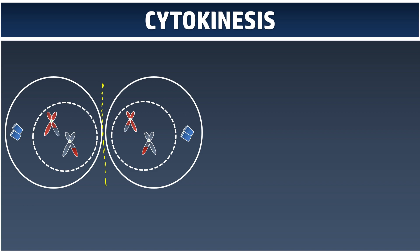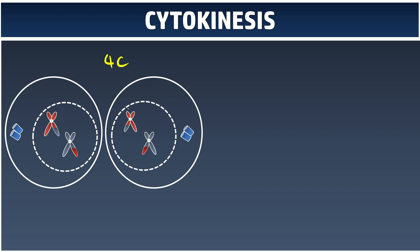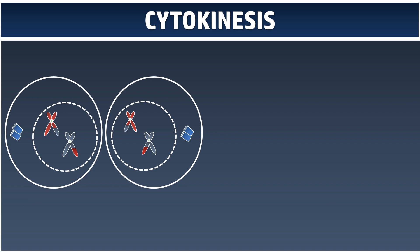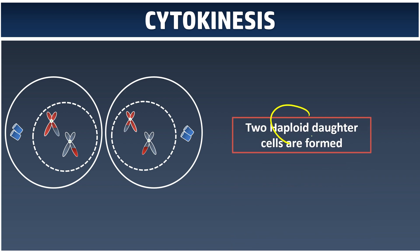But instead of two identical daughter cells, as we can see here, these two cells have a different orientation of the chromosomes, which is why we produce genetic variations. Since in the beginning we had four chromosomes, but now each daughter cell has only two chromosomes — half compared to the four chromosomes. So at the end of Meiosis I, we have two haploid daughter cells formed, and each of them will undergo cell division for the second time.